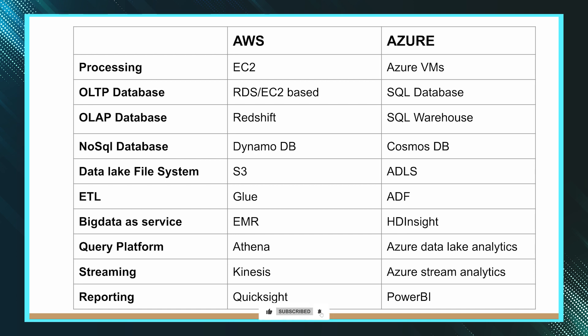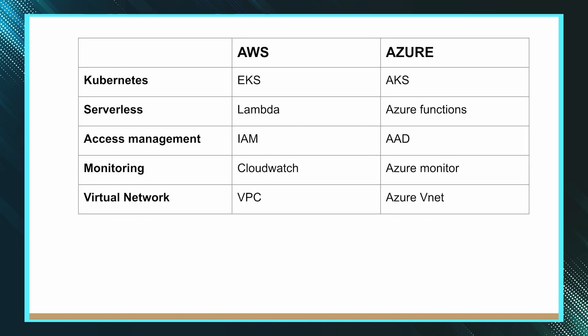For the query platform — which is Athena in AWS — you can query files directly from S3. The similar kind of platform in Azure is Azure Data Lake Analytics. For streaming, Kinesis is the choice in AWS, and similarly Azure Stream Analytics is the equivalent in Azure. For reporting, QuickSight in AWS provides business intelligence and reporting needs, and in Azure you can choose Power BI for reporting purposes.